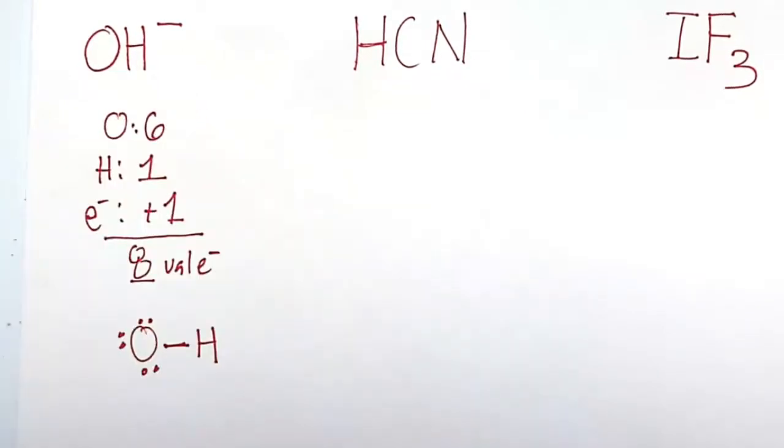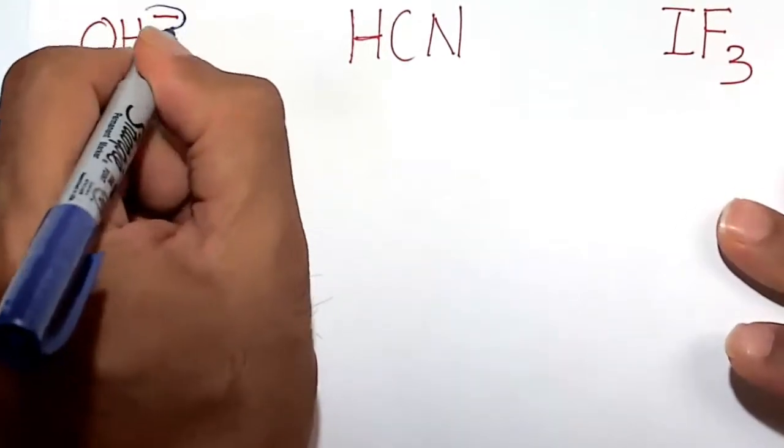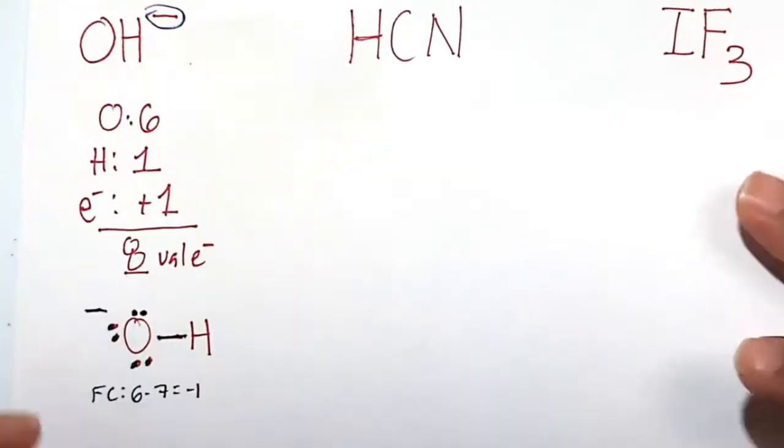Where does the minus charge go? Let's calculate the formal charge of this oxygen. So the formal charge of this oxygen: 1, 2, 3, 4, 5, 6, 7, 7. Oxygen is happy at 6, 6 minus 7 is minus 1. So there is that minus formal charge that's attributed to the hydroxide ion that you made your flashcards of way back when.